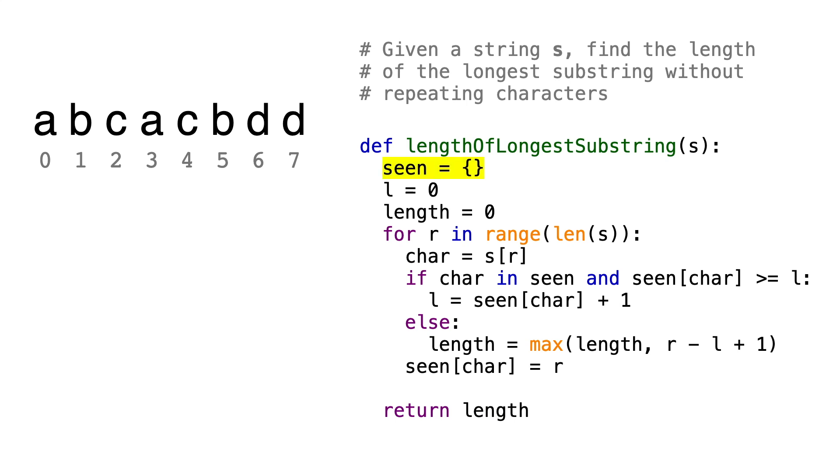First, let's create a dictionary called seen, because it'll keep track of the indices of all the characters that we've seen before as we traverse the string. The key will be the character and the value will be its last known index. Then, we'll set our left pointer, L, to point at the first character at index 0. And we'll also initialize a variable called length to 0.